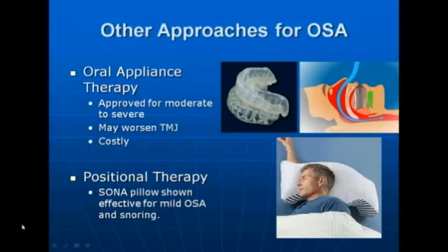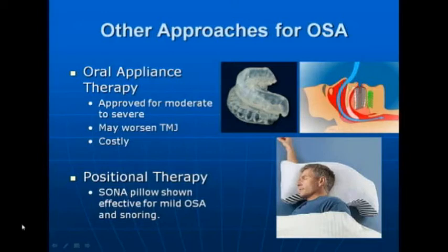Besides CPAP, there are a number of other therapies, including oral appliance therapy, which is FDA-approved for people with mild and moderate sleep apnea. They are made by dentists, so they can be pricey and may be difficult to get approved by insurance companies. It works by advancing the bottom jaw or mandible to prevent airway collapse and can be very successful. For people with positional sleep apnea — whose apnea is worse on their back — a positional pillow like the Sona pillow can keep them on their side and be very successful as well.